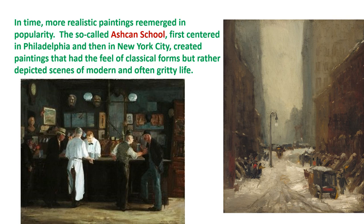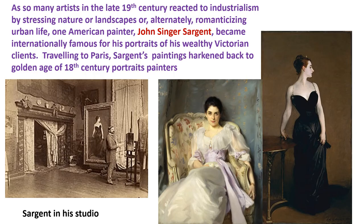In time, more realistic paintings re-emerged in popularity. The so-called Ashcan School, first centered in Philadelphia and then in New York City, created paintings with the feel of classical forms but depicting scenes of modern, often gritty life. While many late 19th century artists reacted to industrialism by stressing nature or romanticizing urban life, one American painter, John Singer Sargent, became internationally famous for his portraits of wealthy Victorian clients. Traveling to Paris, Sargent's paintings hearkened back to the golden age of 18th century portrait painters. This concludes the first of the two videos on the history of American art, covering through the 19th century.